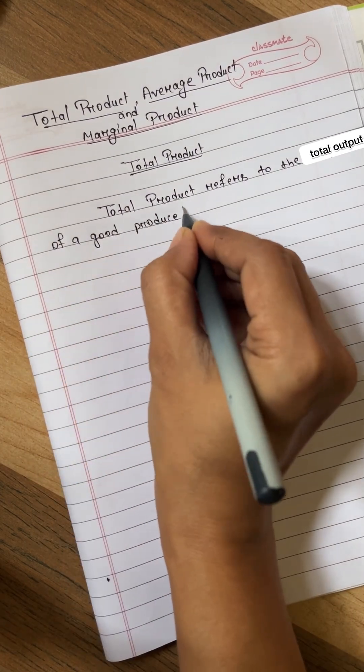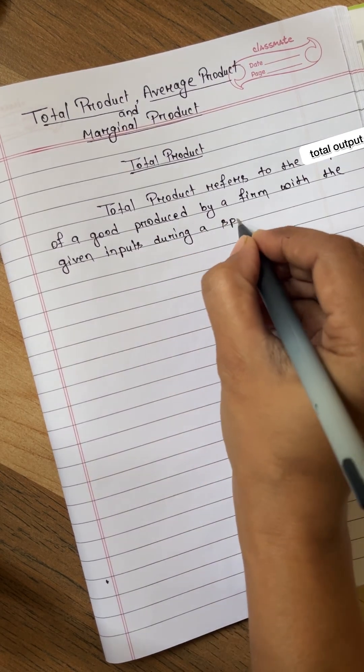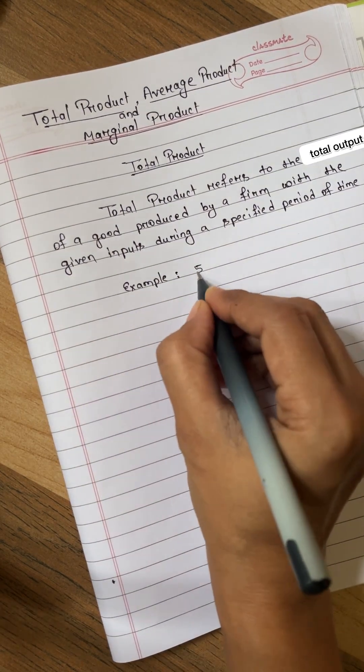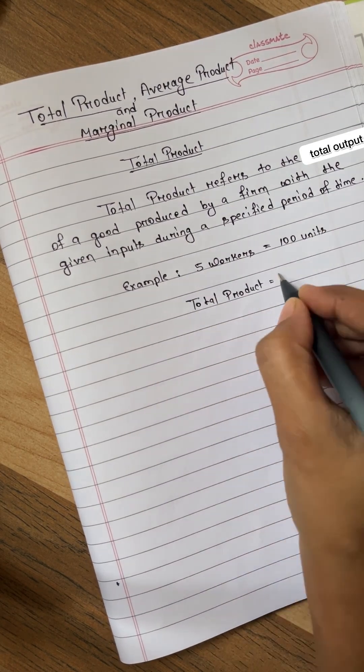Total product refers to the total output of a good produced by a firm with the given inputs during a specified period of time. It is also called the total physical product of the variable input. For example, if 5 workers are producing total 100 units of a commodity then total product is 100 units.